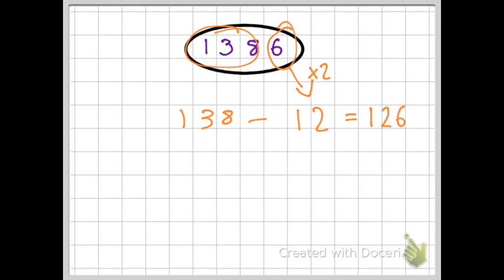Now I don't know if 126 is in the seven times table because I don't know my seven times table up to 126. So what I do is just follow the same process again with that number.